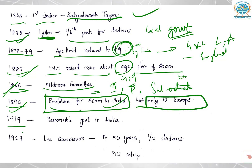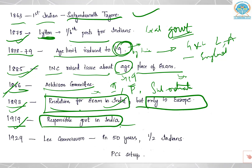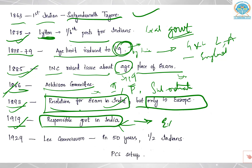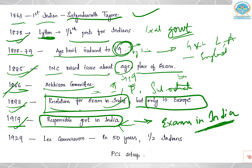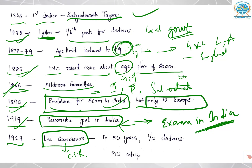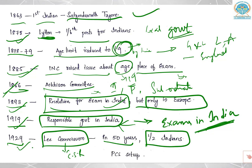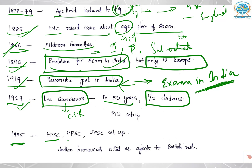Then after many years in 1919, the Montagu-Chelmsford reforms talked about responsible government. They wanted Indians to be part of the government and administration, taking almost one-third Indians into administration, and also the exams to be conducted in India. So by 1919, civil service exams were being conducted in India. In 1924, the Lee Commission, also related to civil service reforms, said that within 50 years half of the administration would be made up of Indians. A public service commission was set up, and by the 1935 Act, Federal Public Service Commission, Provincial Public Service Commission, and Joint Public Service Commission were all established.